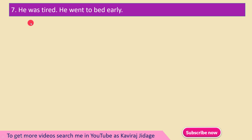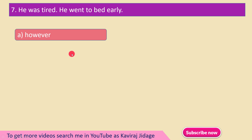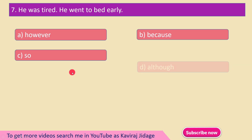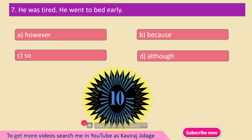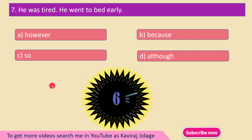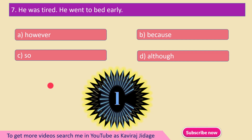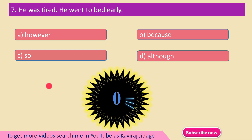He was tired. ___ He went to bed early. Options: A) However, B) Because, C) So, D) Although. The correct answer is option C — So: he was tired, so he went to bed early.